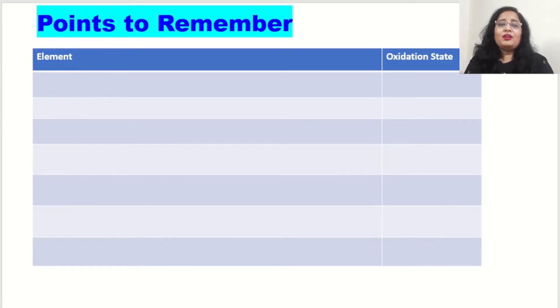First of all we will remember the points. First point is group 1 elements, i.e. alkali metals, are always having plus 1 oxidation state. I can write it here. Group 1 alkali metals.